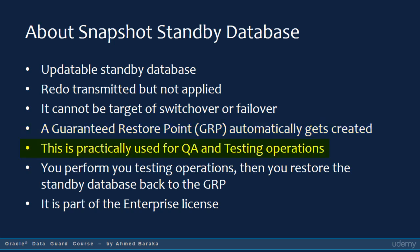Snapshot standby databases are good for scenarios where you need a temporary updatable replica of the primary database, such as quality assurance and testing operations. After you finish your testing on the snapshot standby database, you can restore it back to the GRP and convert it back to the physical standby database. Creating a snapshot standby database is part of the enterprise license — you don't need to purchase a separate license for it.